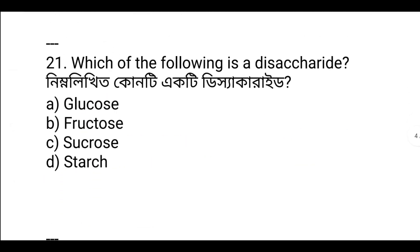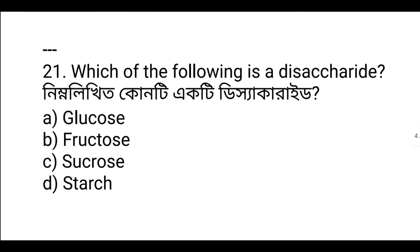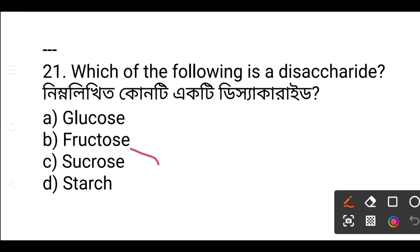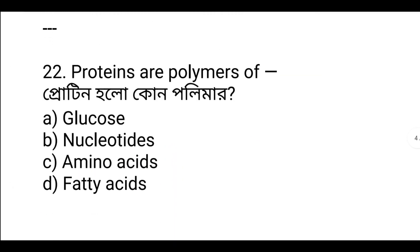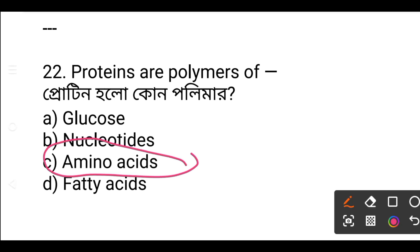Which of the following is a disaccharide? The answer is glucose plus fructose — that is a disaccharide. Protein is a polymer of amino acids.